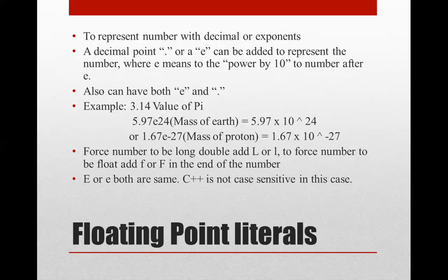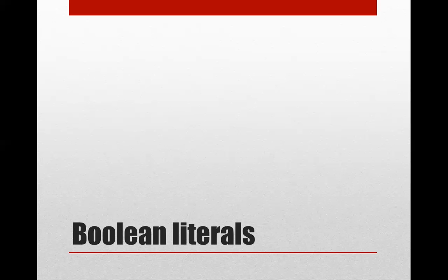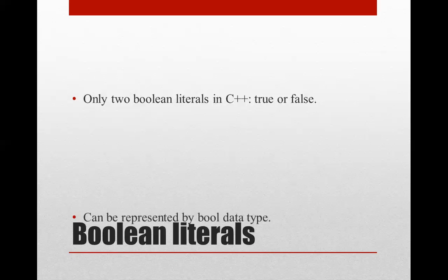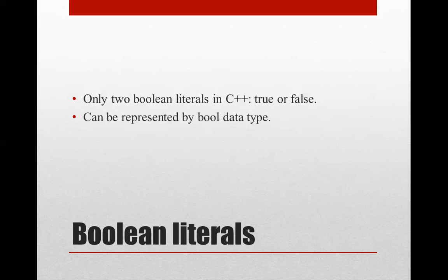Boolean literals are pretty easy to understand. There are only two boolean literals in C++: true and false. They can be represented by the bool data type as discussed in the third and fourth tutorials. There is more to boolean literals that we will cover in more advanced tutorials.